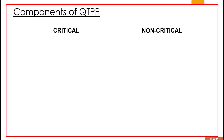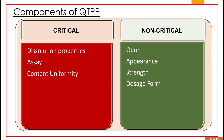The components of QTPP are further subdivided into critical and non-critical. Critical factors are based on the severity of harm to a patient — patient safety and efficacy resulting from failure to meet the quality attributes. Based on how much harm they can cause to the patient, we define the critical and non-critical factors.